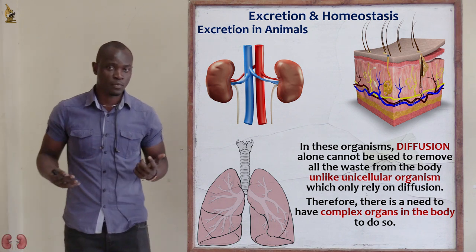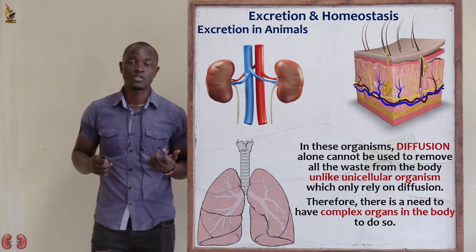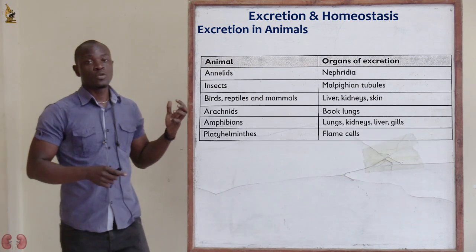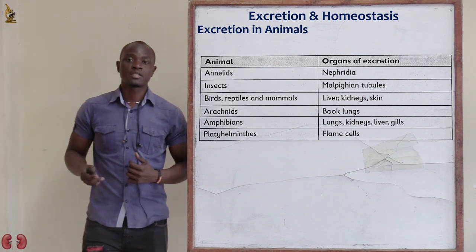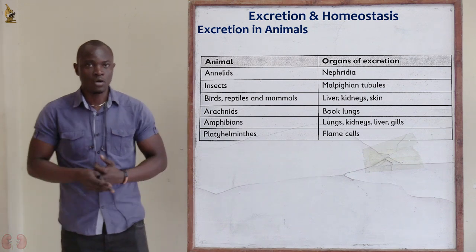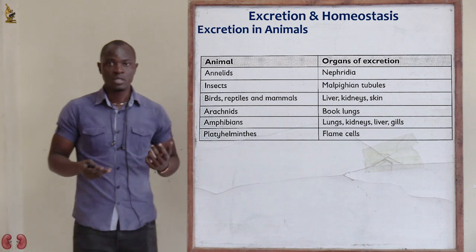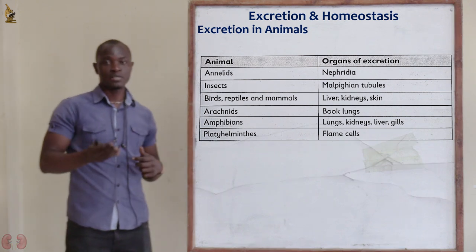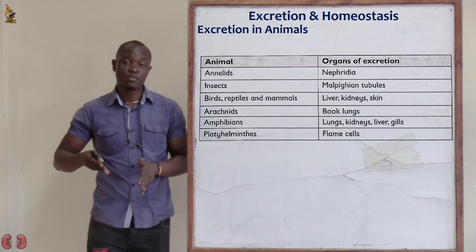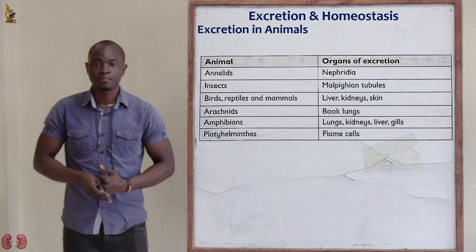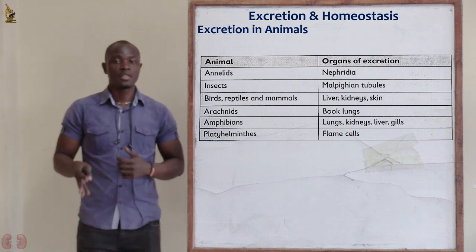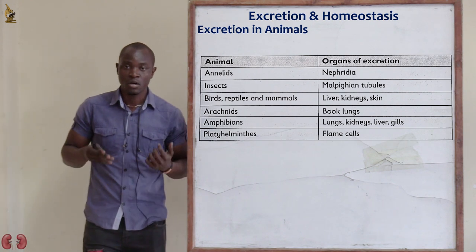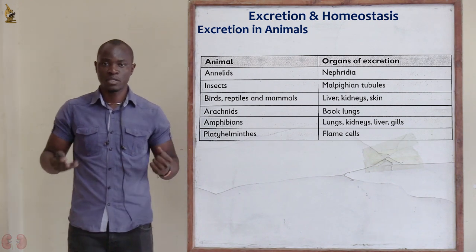The table below summarizes the different excretory organs used by different animals. The first column lists the type of animal, and the second column lists the organ mainly used for excretion of waste products from the body.